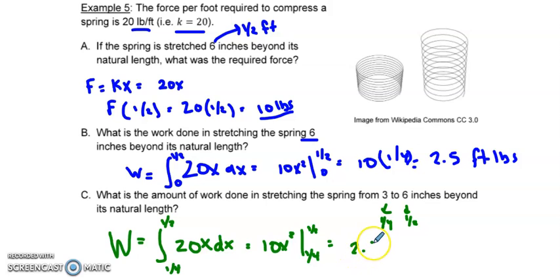But now I have to subtract out 10 times one-fourth squared, which is going to be 10 over 16, which is 5 over 8.